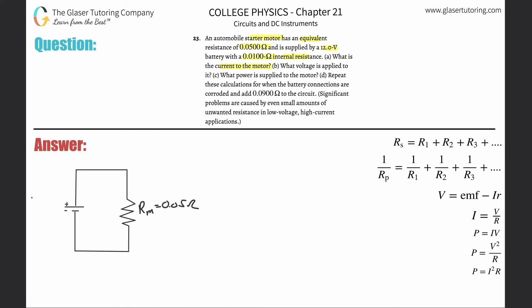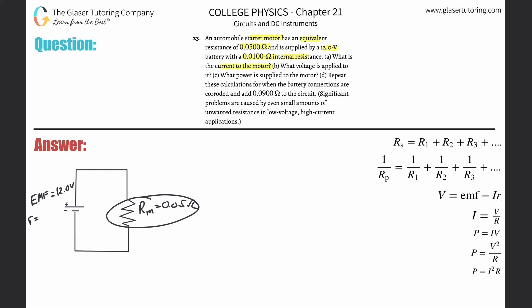The battery supplies a voltage, which by definition is an EMF — essentially the total voltage supplied by the battery, which is 12 volts. It also has an internal resistance, denoted as little r. This internal resistance inside the battery is the same type of resistance as in the starter motor, just located inside the battery. We sometimes need to consider it when analyzing total current and power in the circuit.